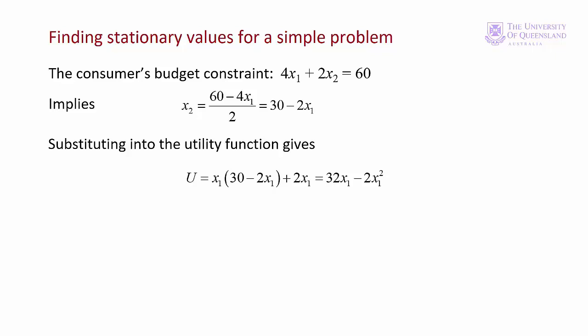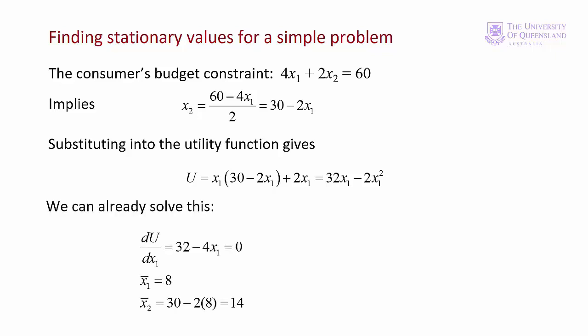We apply the first order condition — differentiate with respect to x1 and solve. The optimal value for x1 is 8. We substitute back to find x2. We can show this is a maximum by checking the second order conditions: the second derivative is always negative, our function is concave, so we have a global maximum. However we can only take this approach with the simplest of problems. For constrained optimization problems that are in any way interesting, we need to turn to the Lagrange multiplier method.